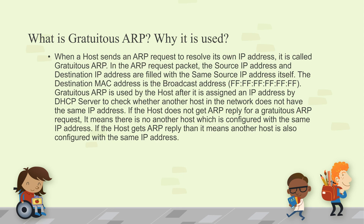What is a Gratuitous ARP and why is it used? When a host sends an ARP request to resolve its own IP address, it is called a Gratuitous ARP. In the ARP request, the source IP address and destination IP address are filled with the same source IP address. The destination MAC address is the broadcast address. Gratuitous ARP is used by a host after being assigned an IP address by a DHCP server to check whether another host on the network has the same IP address. If the host gets an ARP reply, it means another host is also configured with the same IP address.